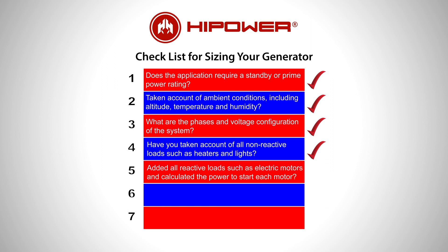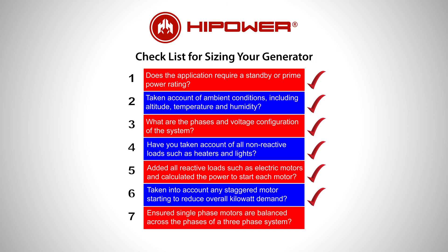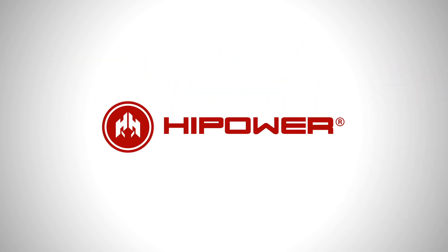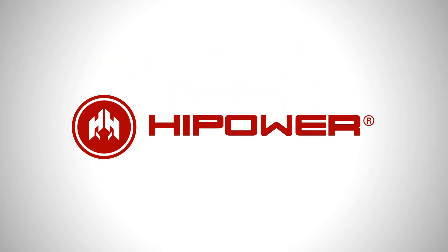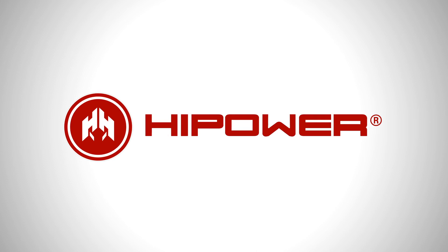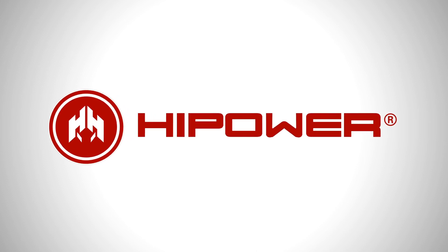Have you added all the reactive loads such as larger electric motors and calculated the power to start each motor? Have you taken into account any staggered motor starting to reduce the overall kilowatt demand? Have you ensured single-phase motors are balanced across the phases of a three-phase system? Taking account of all the points in this video will go a long way to ensuring you have a correctly sized generator able to reliably meet your load requirements.